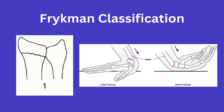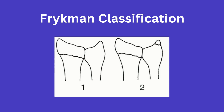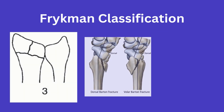Starting with type 1 and 2: type 1 involves an extra-articular fracture of the distal radius, which would include a Colles or Smith fracture. Type 2 is simply a type 1 plus an ulnar styloid fracture.